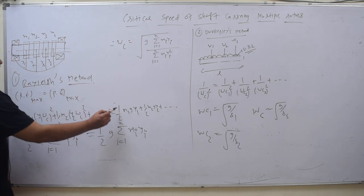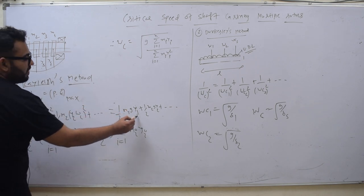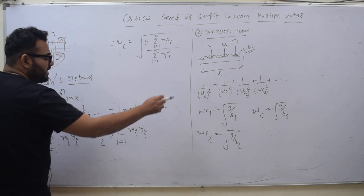One half Mgh. So one half M1 G Y1 plus one half M2 G Y2.